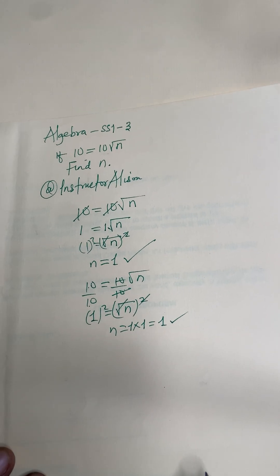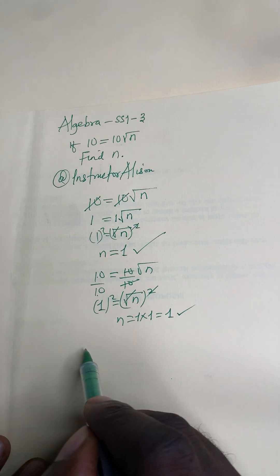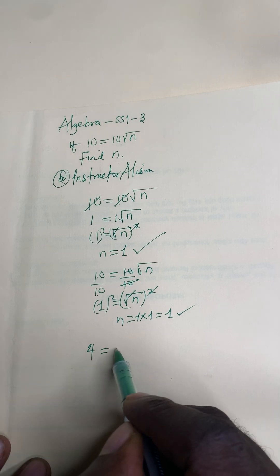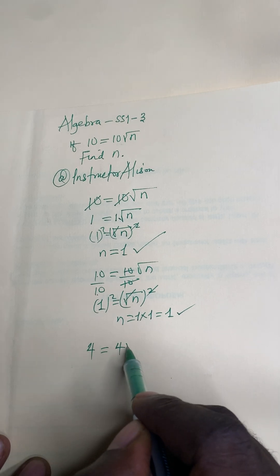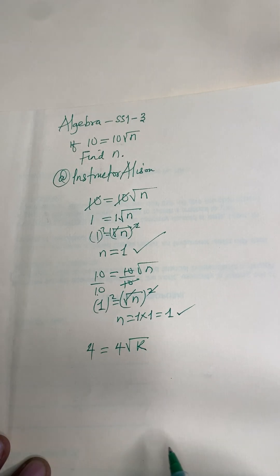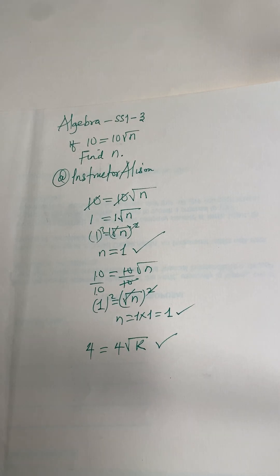If you're sharp, try this one: 4 equal to 4 square root of k. Put the answer in the comment section.